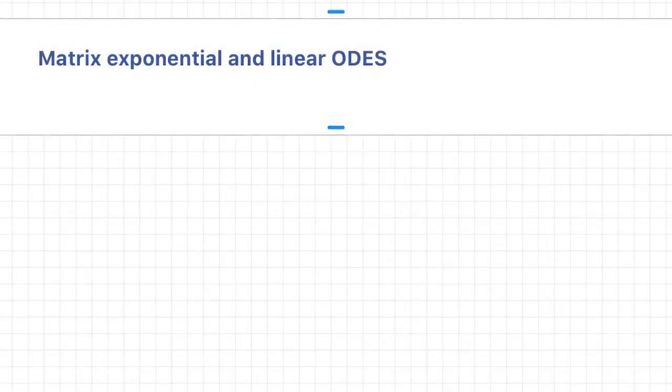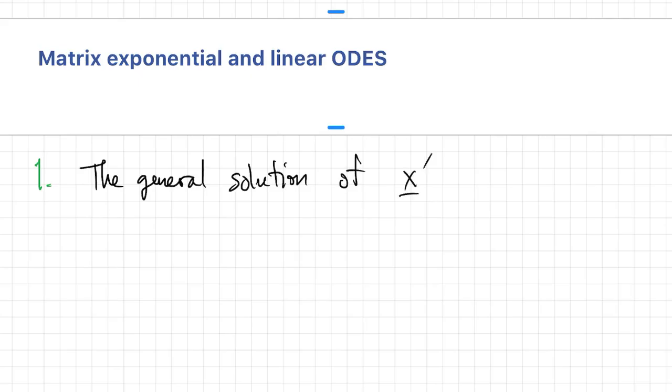Let's get back to our linear ODE. There are some very important facts that follow from that series definition and the other properties. The general solution of x' = Ax can be written using a matrix exponential: x equals e^(tA) times an arbitrary vector C.